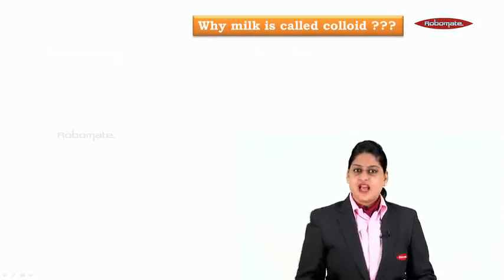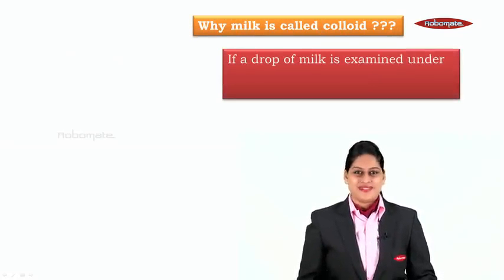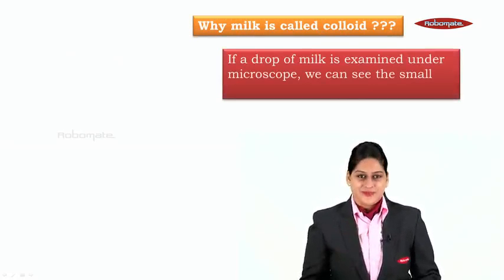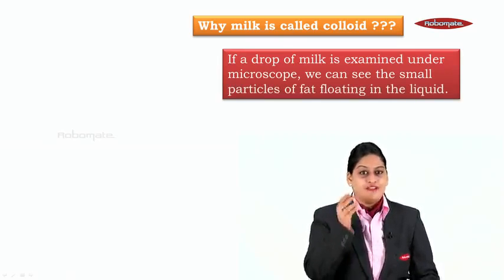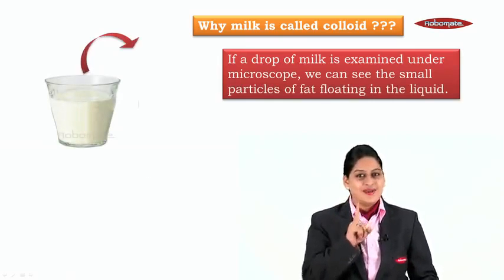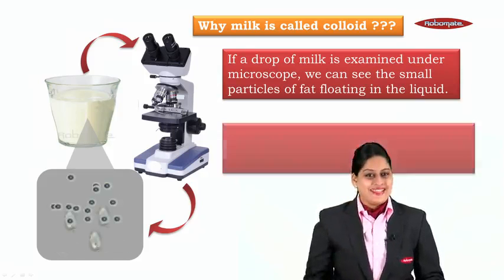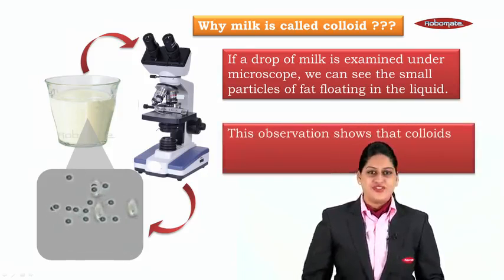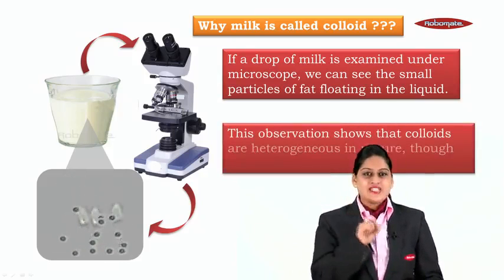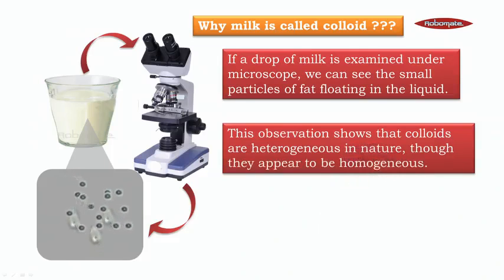Now let us see why milk is called a colloid with the help of a small experiment. One drop of milk is examined under the microscope. We can see small particles floating in the liquid. Can you see the slide? There are small particles present — that means it is a heterogeneous mixture and a colloid. This observation clearly shows us that colloids are heterogeneous in nature, though they appear to be homogeneous to us.